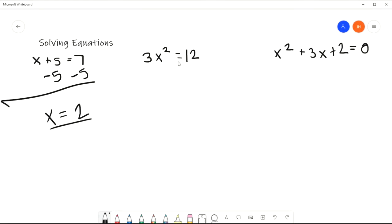3x squared equals 12. This one's a little bit harder, but not too much harder. So we're going to divide both sides by 3 to get rid of that 3 there. And so we'd be left with x squared equals 12 divided 3 is 4. Now, how do I get rid of the square here? The inverse operation of a square is a square root. So I will square root both sides. That will remove that, and I will be left with x equals the square root of 4 is 2 plus or minus.